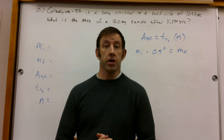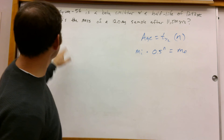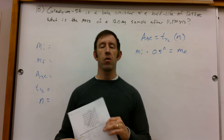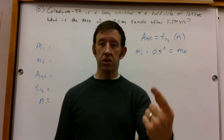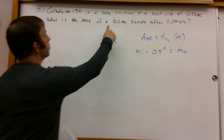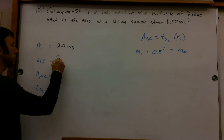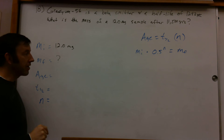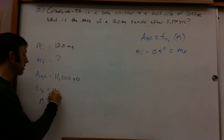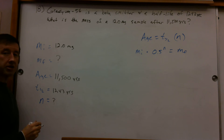Last one here. Number 18, practice exam. Gradium-56 is a beta emitter with a half-life of 1,243 years. What is the mass of a 12-milligram sample after 11,500 years? We want to know how much we're going to have after 11,500 years — we can make a prediction using half-life. I'm going to organize my information: my initial amount is 12 milligrams; I don't know how much I'm going to end up with yet, so that's a question mark. My age is 11,500 years; my half-life is given as 1,243 years. I don't know how many half-life periods that is, but I can calculate it.